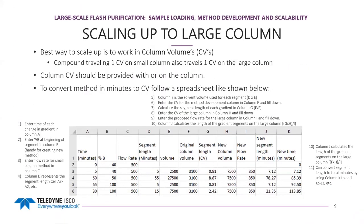When scaling up to the large column with a method you like on the small column, the easiest way to scale up is to work in column volumes. A column volume is the time it takes for a compound that elutes at the solvent front to travel down the column — that's the void space in the packed column. One CV on a small column is equivalent to 1 CV on a large column. If a smaller column has a 100 mL column volume and a larger column has a 10 L column volume, it takes 100 mL to elute off the small column and 10 L off the big column — but you can directly proportionally scale from those factors.